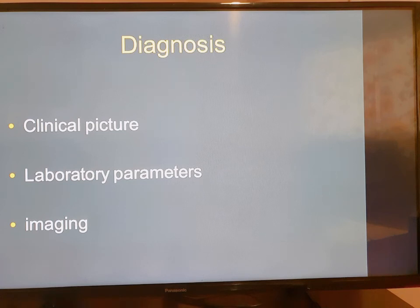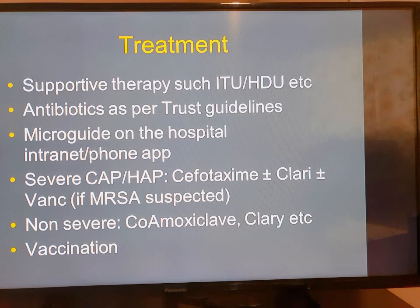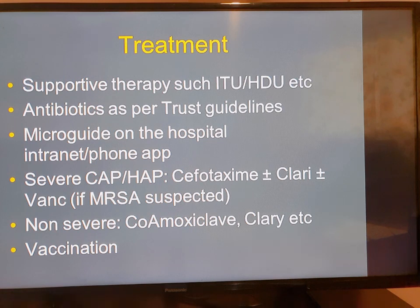Imaging — a chest X-ray — is done to check for any changes in the lungs. After diagnosis, treatment depends on the severity of the illness. If the child is severely ill, they will be taken to the intensive therapy unit or high dependency unit. Antibiotics are prescribed according to whether the infection is mild, moderate, or severe, and every hospital has its own guidelines.